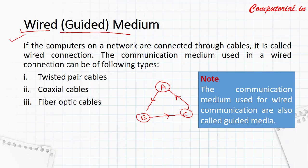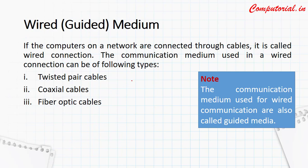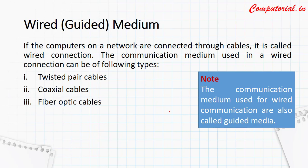That's why it is termed as a guided medium. But suppose if we are using a wireless medium — say four computers A, B, C, and D — in a wireless network we cannot see whether A and B are connected, or B and D, or C and D. We cannot see the connection links. That's why wireless networks are termed as unguided medium.